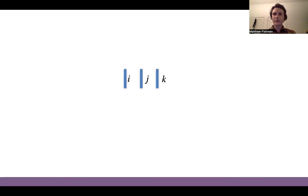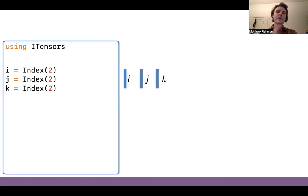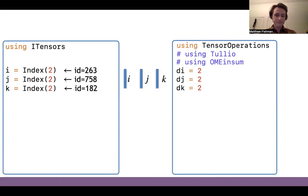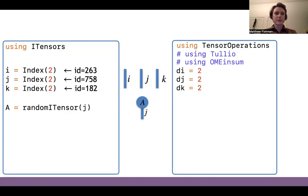Let me introduce the way that we work with tensors in iTensor. Say we're looking at a state of three qubits. In iTensor, we first define three indices which get assigned unique identifiers, used for operations such as addition and contraction. The equivalent operation in other libraries using Einstein summation notation, such as TensorOperations, Tullio, or OMEinsum, would be to first define the dimensions of indices. To represent an order-one tensor in iTensor, we define our tensor with the appropriate index, whereas with standard Julia arrays, we would create a vector of length two.